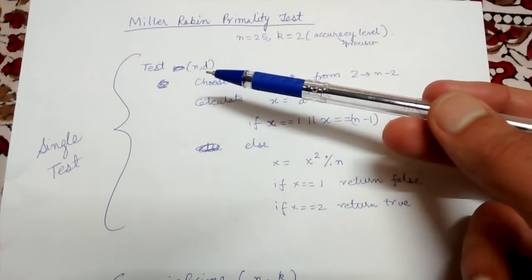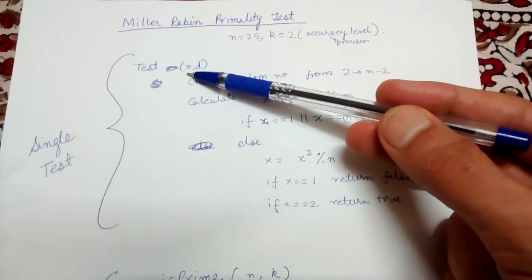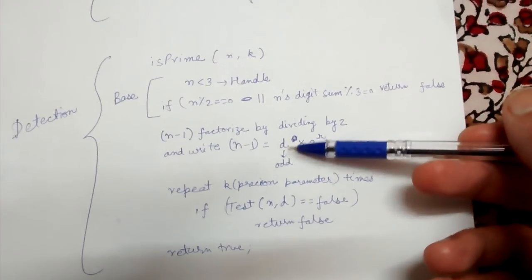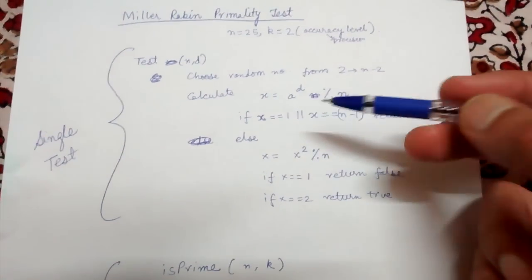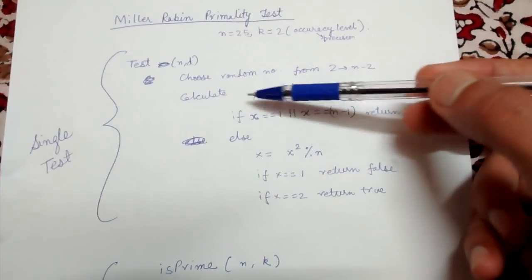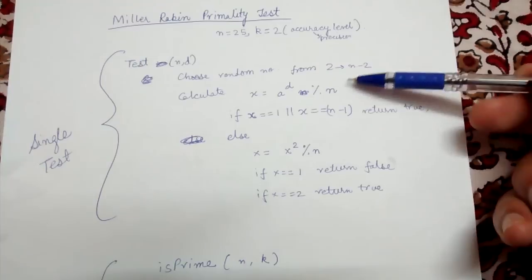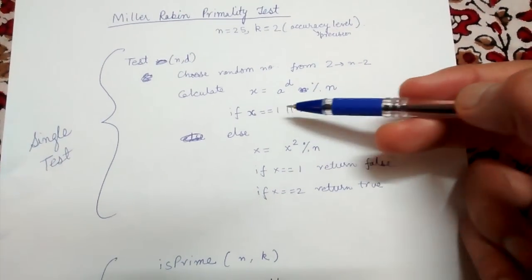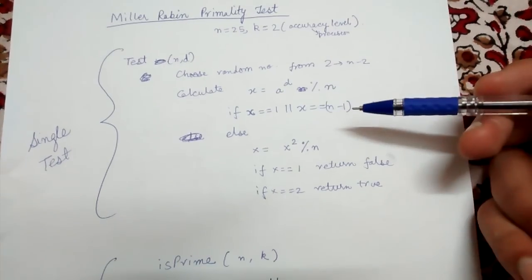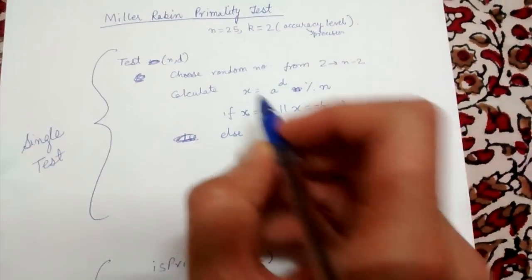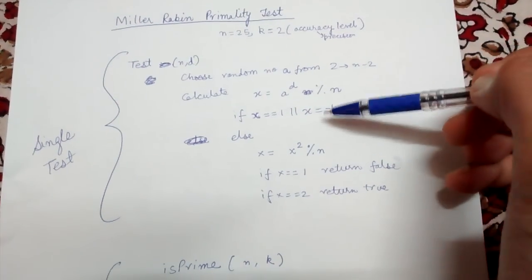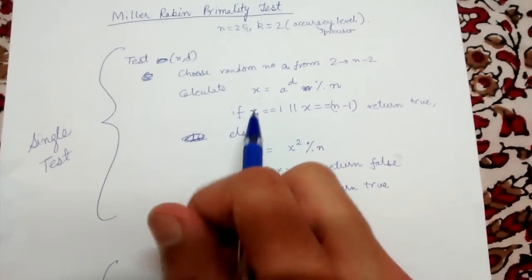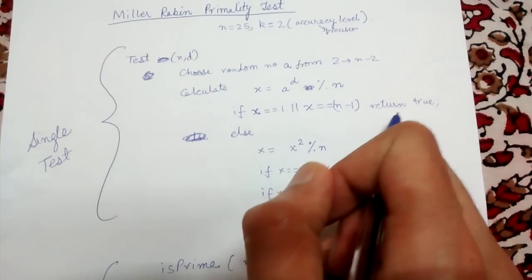Now let's look at what a single test does. In a single test we pass two numbers n and d, where n is the number being tested and d is the odd number obtained by dividing n minus 1 by 2 continuously. Given n and d, we choose a random number a from 2 to n minus 2, both included. We then calculate x = a^d mod n. If x equals 1 or x equals n minus 1, we immediately return true, meaning the number passes this particular test.